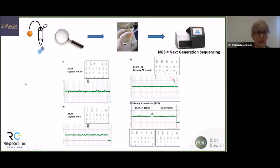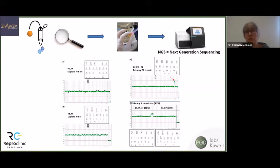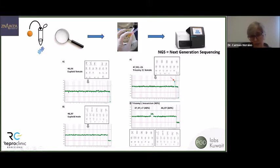We send one sample per embryo to the genetic laboratory for processing and analysis. There are different technologies available to analyze embryos for aneuploidies, but nowadays the most widely used is next-generation sequencing, or NGS. This technology can detect aneuploidies across the whole chromosome set. These are the result profiles we can obtain from this platform.